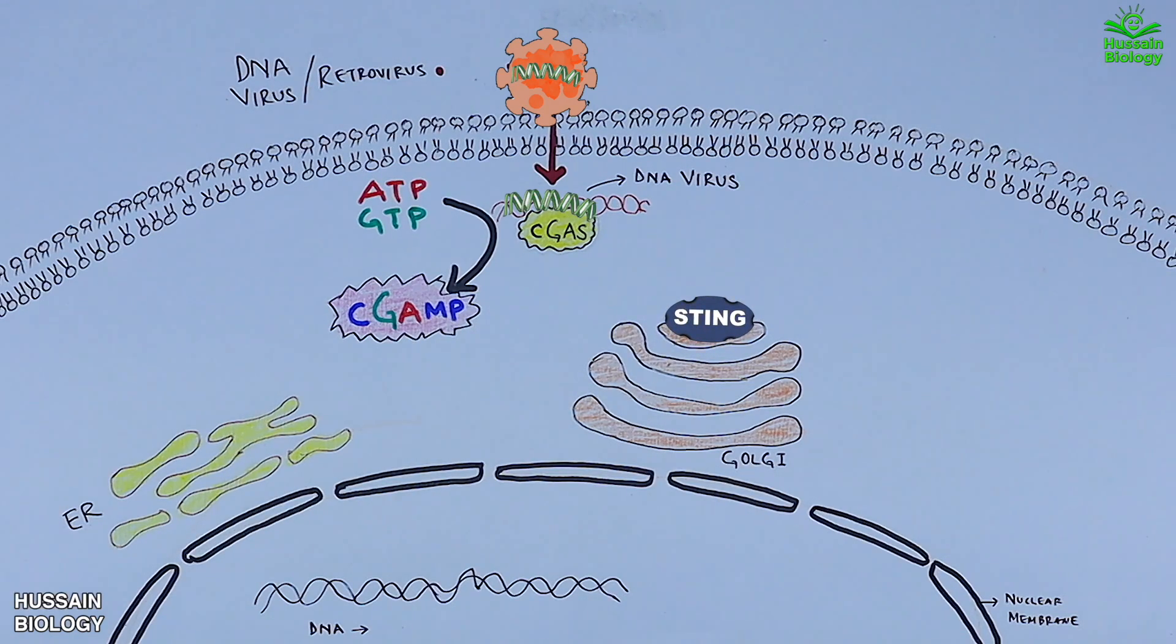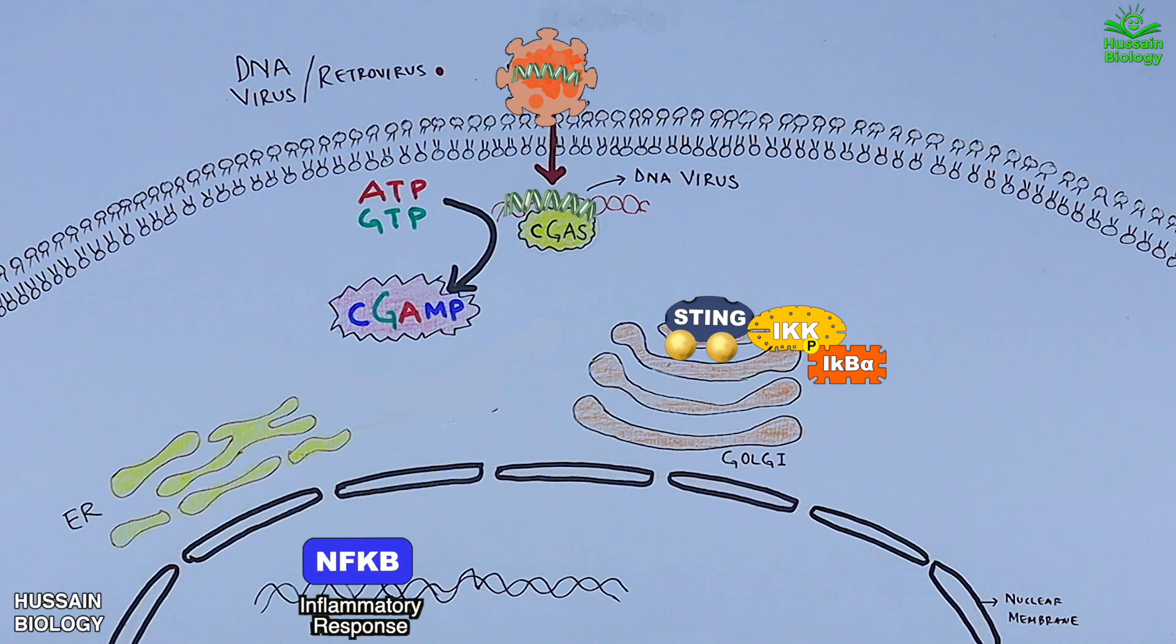Here at the Golgi apparatus, the STING molecule is polyubiquitylated. This activated and polyubiquitylated STING molecule recruits IKK, the IκB kinase molecule. This IKK molecule phosphorylates and activates the IκB alpha molecule, which ultimately activates NF-κB molecules. NF-κB gets into the nucleus where it activates inflammatory cytokines.